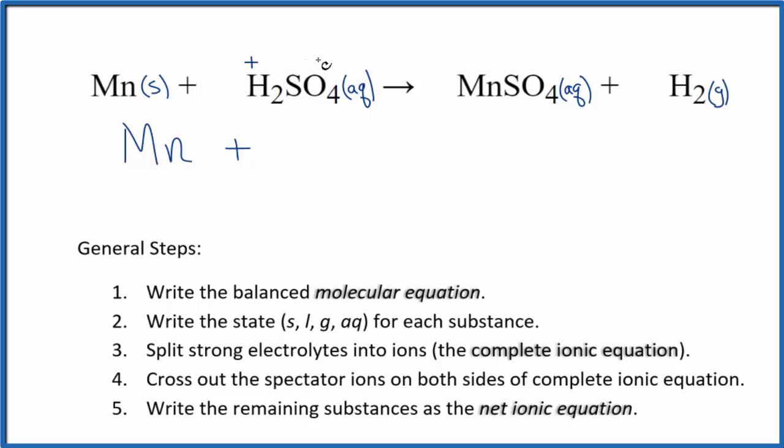And then the sulfate ion, the whole thing, 2 minus. So we have 2 hydrogen ions, 2H plus, and then we have our sulfate ion, SO4, 2 minus. These are the reactants in our net ionic equation.